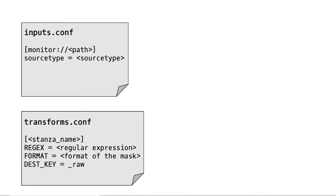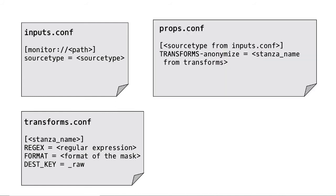This covers inputs.conf and the other configuration files for raw data manipulation. Props.conf is the other important config file. You can observe common parameters across props.conf and transforms.conf — source type is defined in inputs.conf, while the anonymizing stanza name comes from transforms.conf. This is the specific stanza configuration for props.conf.